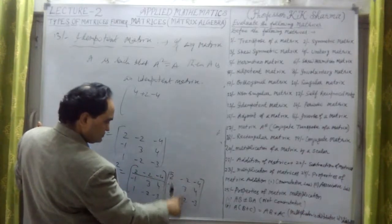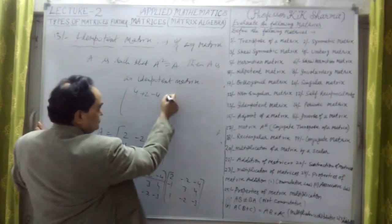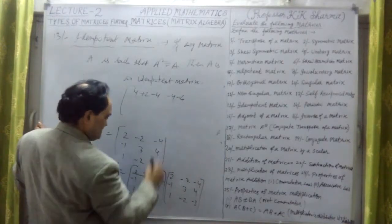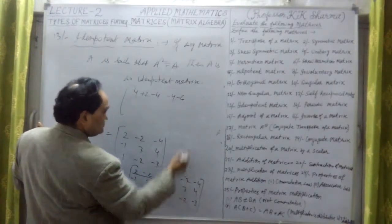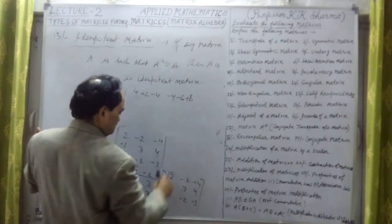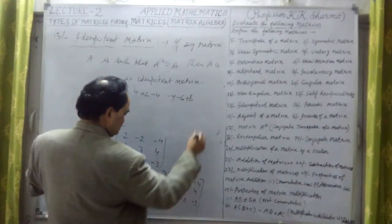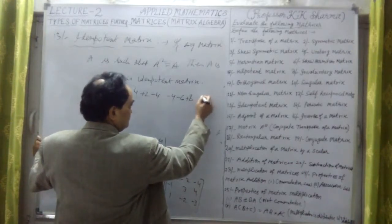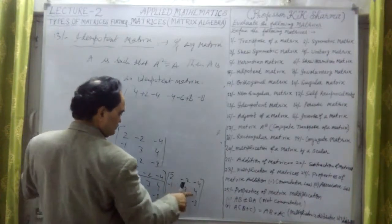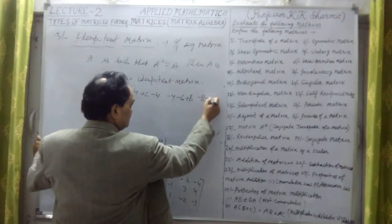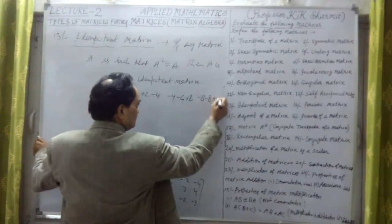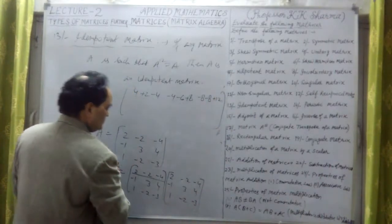If I multiply them, then what it is going to give us: multiplying this first row into first column — 2 into 2 is 4, minus 2 into minus 1 is plus 2, minus 4 into plus 1 is minus 4. Then first row, second column: 2 into minus 2 is minus 4, minus 2 into 3 is minus 6, minus 4 into minus 2 is plus 8. Then third column, first row, third column: 2 into minus 4 is minus 8, minus 2 into plus 4 is minus 8 again, then minus 4 into minus 3 is plus 12.